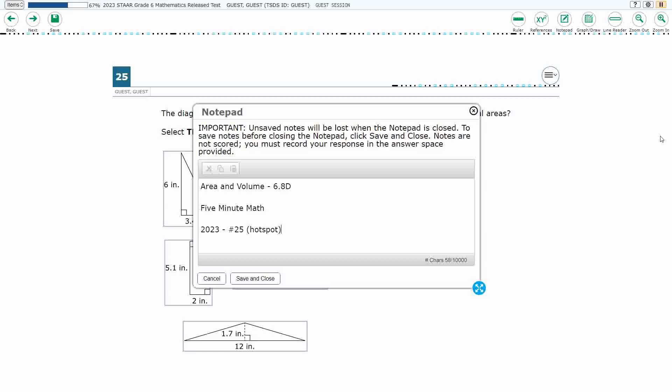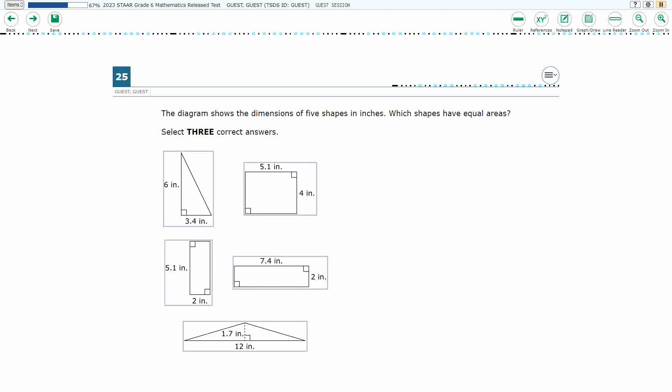Hello, and welcome to 5-Minute Math. Today we are looking at the 6th grade concept of area and volume. This is standard 6.8d in the great state of Texas, and we are using item number 25, a new item type called hotspot of the 2023 released STAR test.